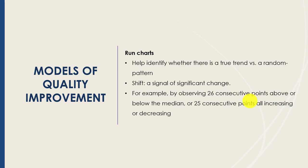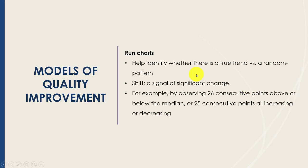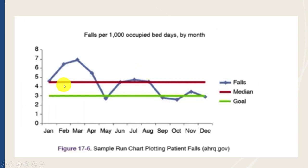Here is a sample run chart plotting patient falls. On the x-axis is time — looking at months, about a year's worth of data. On the y-axis is the quality metric: number of falls per 1,000 occupied beds. The red line is the median. With falls, lower is better — the goal is fewer falls, ideally zero. The team sets their goal and plots data month by month to see how they are doing.